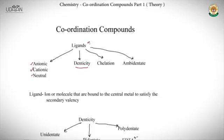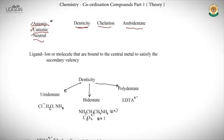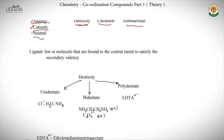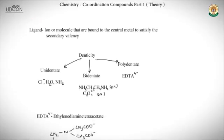The next concept is ligands. Ligands are ions or molecules that are bound to the central metal atom to satisfy the secondary valency. We need to understand a few subtopics: anionic ligands, cationic ligands, neutral ligands, denticity, chelation, and ambidentate ligands.